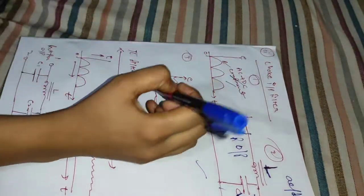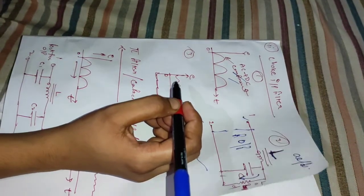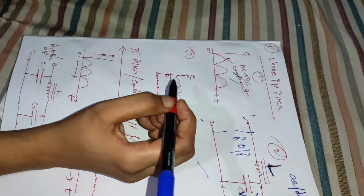This is the rectifier output. The choke offers high opposition to passages of the AC component.